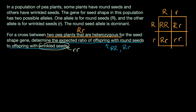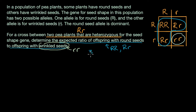So if you look here, out of the four equally likely scenarios, three of them end up with a phenotype of round seeds, and only one of them ends up with a phenotype of wrinkled seeds. Remember, phenotype is what's being expressed. So the expected ratio is going to be three offspring with round seeds for every one with wrinkled seeds — a three to one ratio.